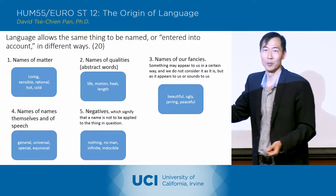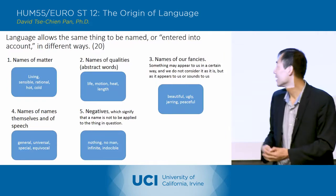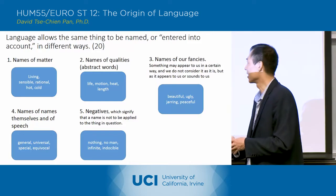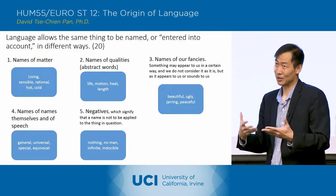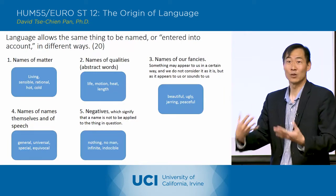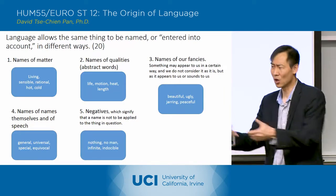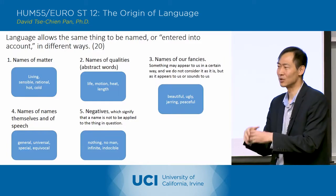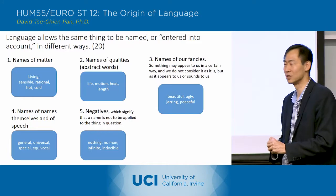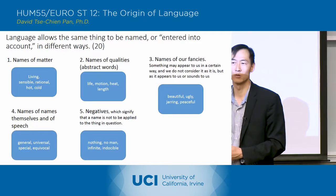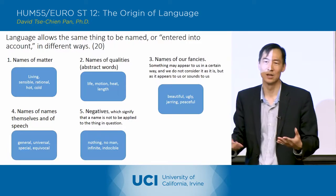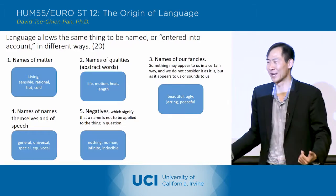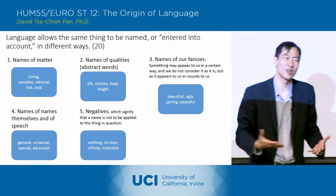Finally he has negatives, which are important because they signify that a name cannot be applied to the thing in question. It's a way of avoiding falsehood by saying you can't apply that category to that thing — denying that relationship. He says that's a whole other category of words, the negatives, which admonish us not to make false connections.